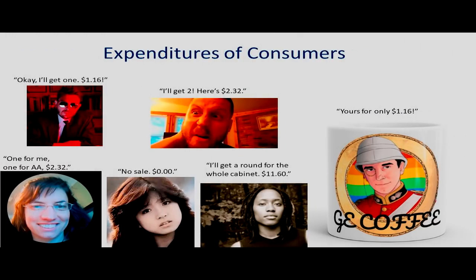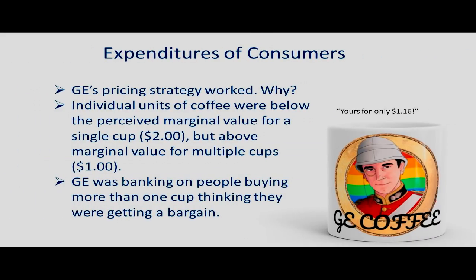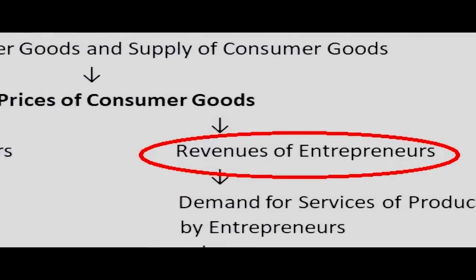Here are all the different customers coming in. Friend is willing to get one, Bantu grabs two, Ray is lactose intolerant and won't buy one. The prime minister comes in and buys a round for the whole cabinet, getting one for her buddy the academic agent. The pricing strategy is working for G because the individual units of coffee were below the perceived marginal value for a single cup ($2) but above the marginal value for multiple cups ($1 each). G was banking on people buying more than one cup, thinking they were getting a bargain.